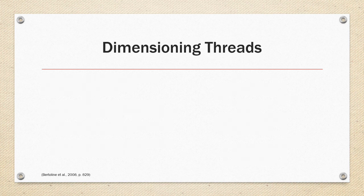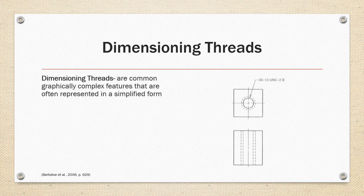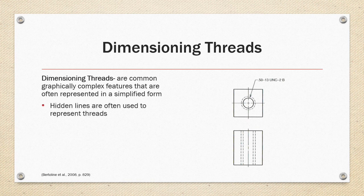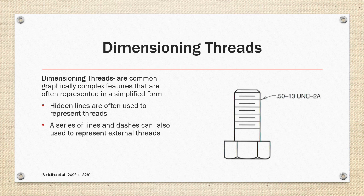Dimensioning threads. Threads are a common graphically complex feature that are often represented in a simplified form as hidden line geometry as shown in the two views on the right and for external threads can also be represented by a series of lines and dashes as shown in the image on the right.